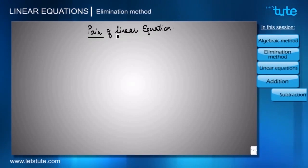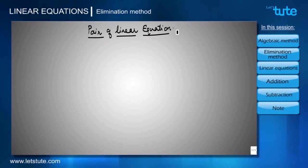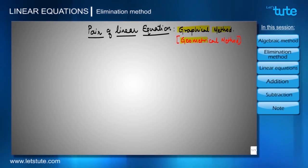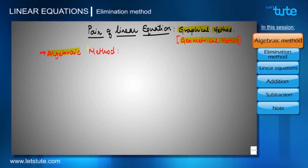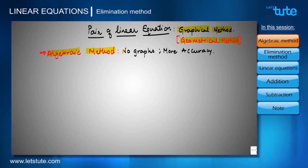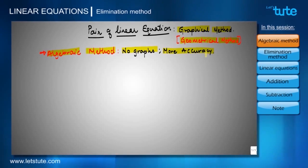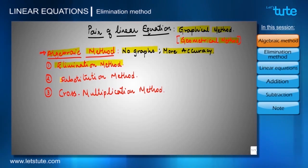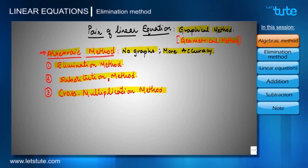Welcome to this session on pair of linear equations. In previous sessions we have seen how to solve pair of linear equations using the graphical method, also called the geometrical method. Now we'll learn the algebraic method. The benefit of this method is we don't have to draw any graph, but we still get more accurate values for x and y. We have three methods: elimination method, substitution method, and cross multiplication method.